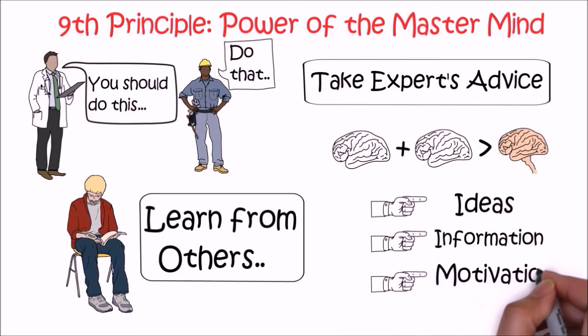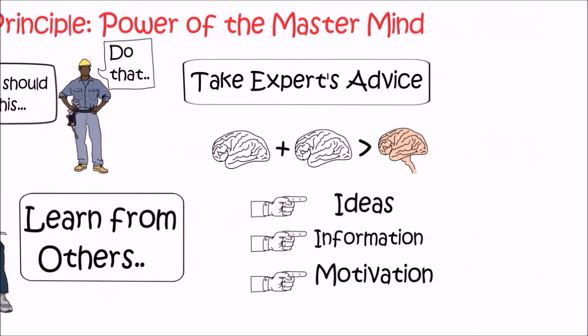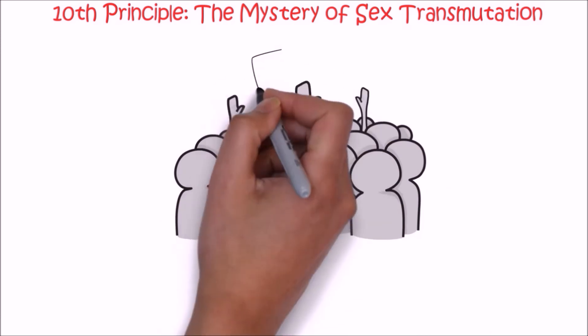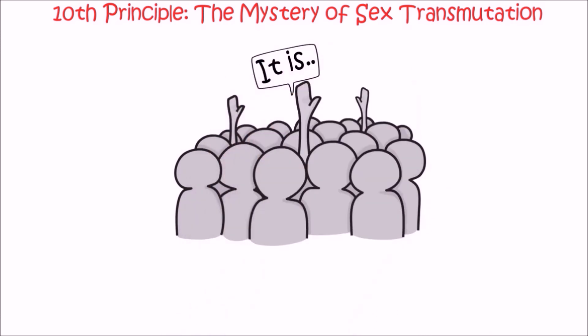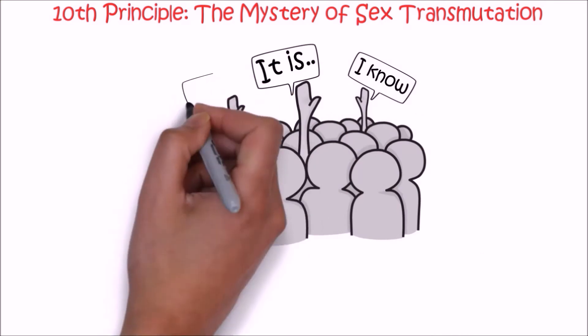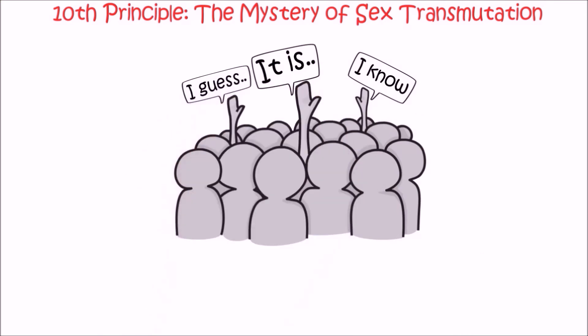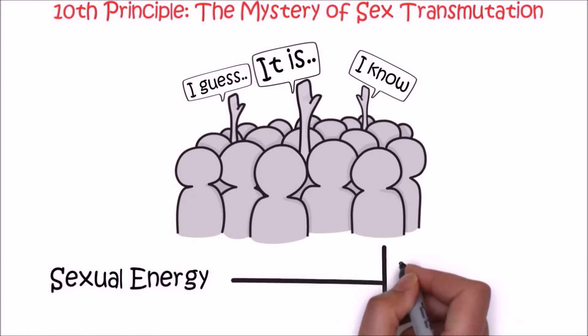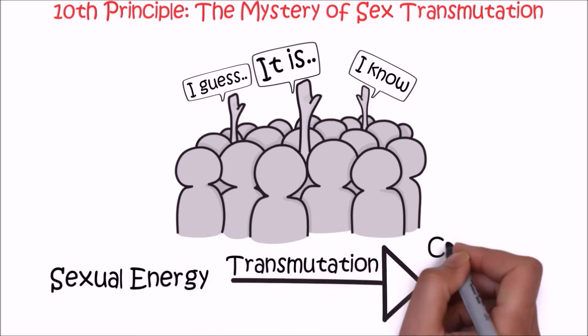The tenth principle is the mystery of sex transmutation. This is a controversial chapter. Different people understand or perceive it in different ways. But this sentence in the book resonated with me: the salesman who knows how to take his mind off the subject of sex and direct it in sales effort with as much enthusiasm and determination as he would apply to its original purpose has acquired the art of sex transmutation, whether he knows it or not.